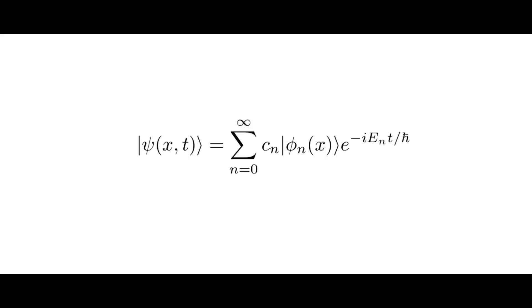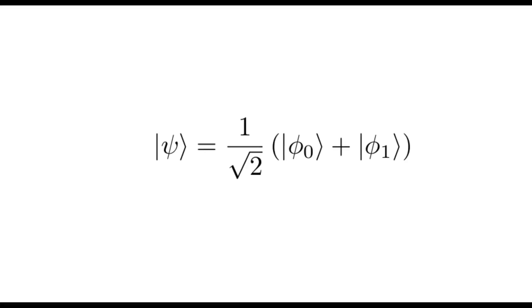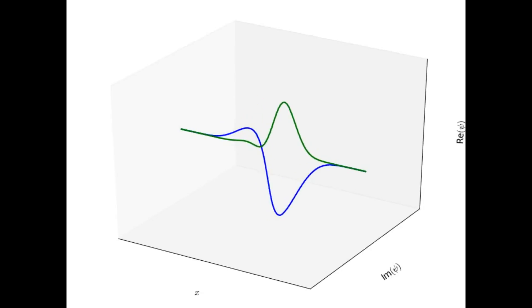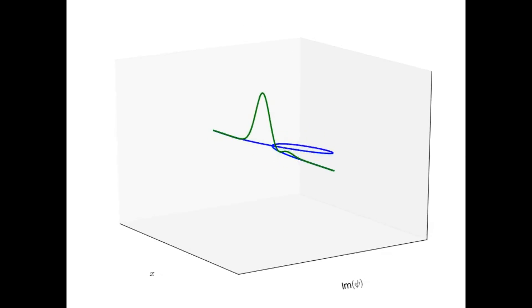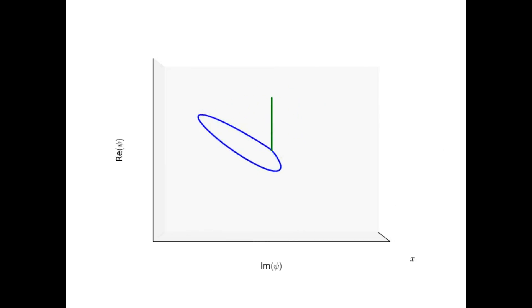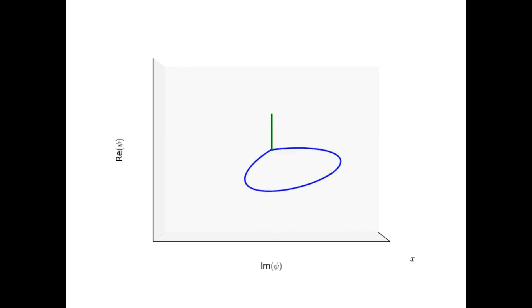To illustrate what a more general state looks like, let's see the state that's in a superposition of the first two basis states. The 1 over square root of 2 factor is to properly normalize the wave function. Remember that the sum of the norm squared of all of the coefficients in front of each basis element must add up to 1. In three dimensions, the function looks like this. In this state, we immediately see that the probability density is no longer static, but instead oscillates back and forth between being centered at two separate points. This is a consequence of the fact that the component states phi 0 and phi 1 don't share a phase, and thus at any given time interfere constructively and destructively in different combinations at each point.